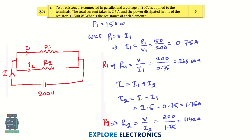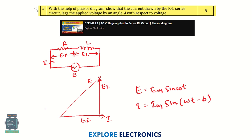Question 2C is a problem on parallel resistances connected as shown, with given values for total current as well as voltage. We need to find out R1 and R2.